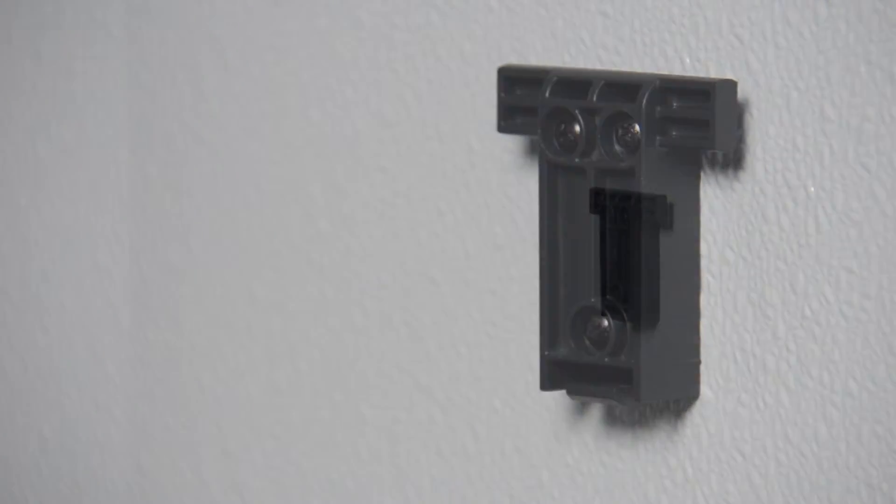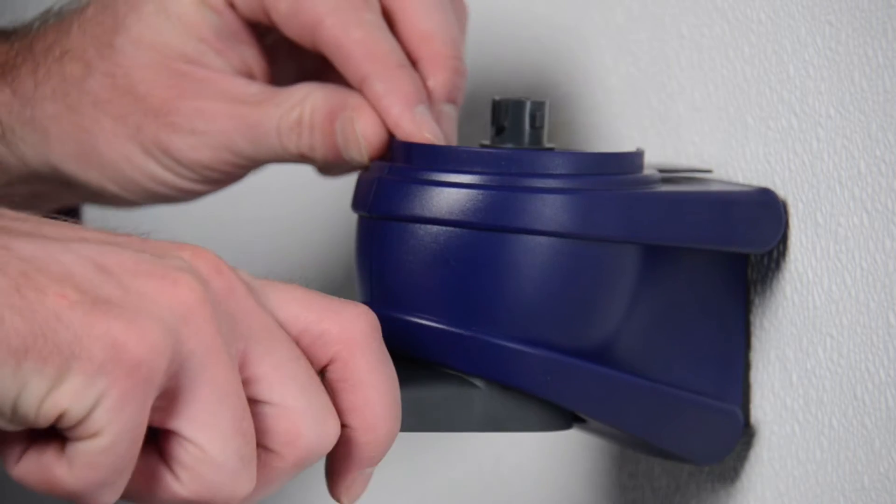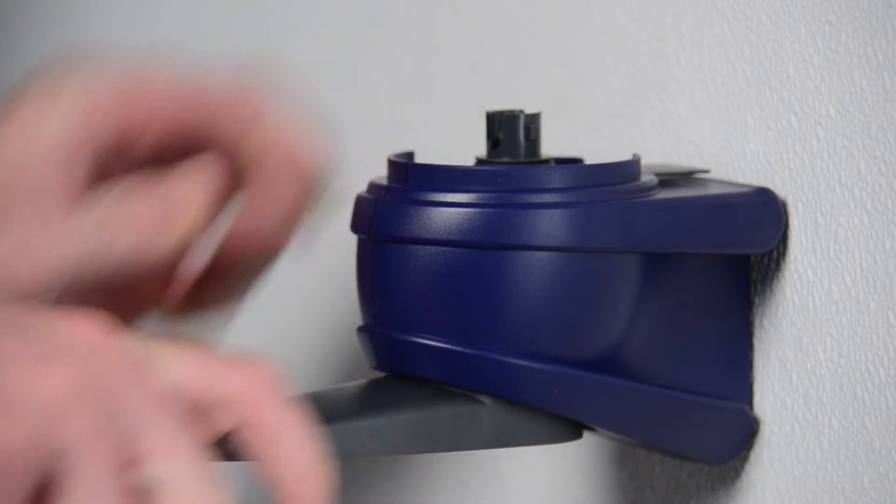Fit the dispenser onto the bracket and lock it into place by gently pulling downward. Listen for a click to indicate the dispenser is secured.